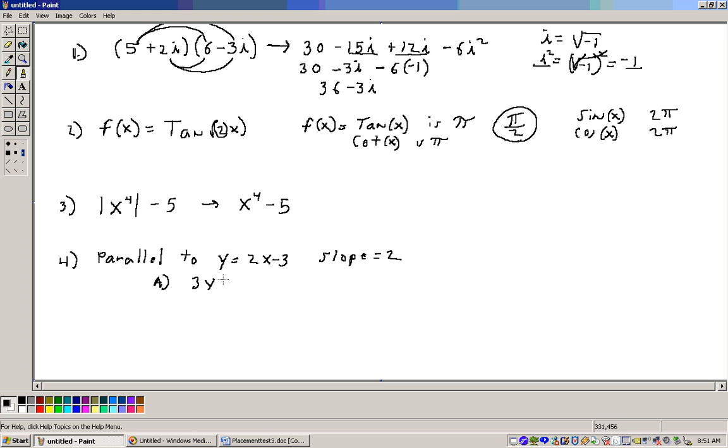Choice A was 3y plus 2x equals 3. If we get the slope of this thing by solving it for y, we would get 3y equals negative 2x plus 3. And if you divide that by 3, we would see that this slope is negative 2 thirds. So that isn't going to cut it. Let's check B. B is 3y plus 3x equals 1. And if we solve this for y, we get 3y equals negative 3x plus 1. And if we divide this by 3, the slope would be negative 3 over 3 or negative 1. So that's not 2. So that one wouldn't be parallel.